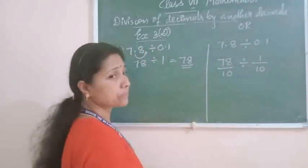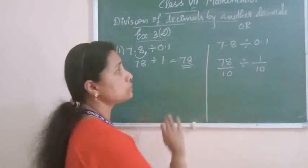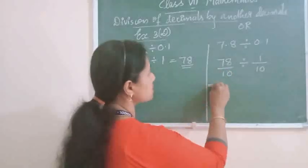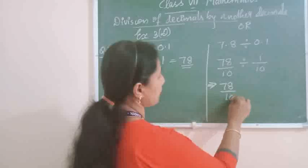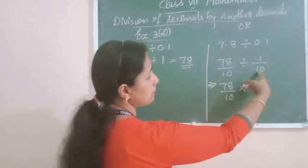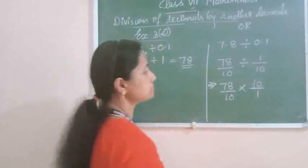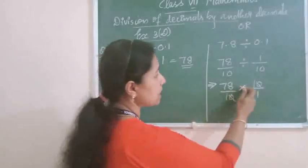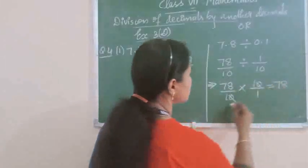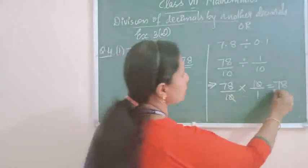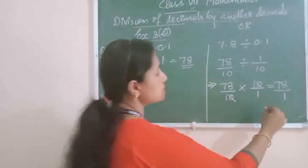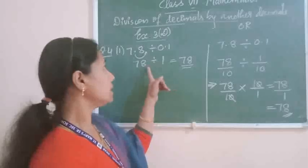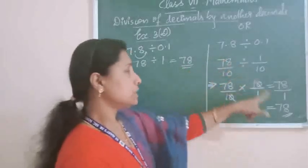Now it is a fractions division, and you already know how to do division of fractions. You have to multiply with the reciprocal of the second fraction. So here, 78 upon 10 multiplied by the reciprocal of 1 upon 10, which is 10 upon 1. Now you can cancel the zeros. The remaining number you multiply: 78 into 1 is 78, and the denominator 1 into 1 is 1. So 78 upon 1 is equal to 78. In both methods you got the same answer — 78.